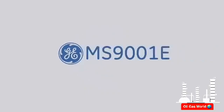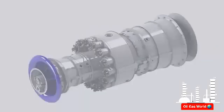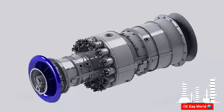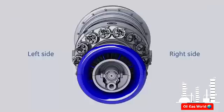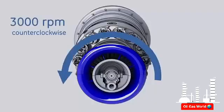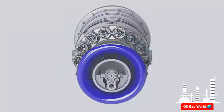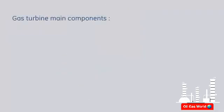MS 9001E Gas Turbine Training. This video will describe the main components of the gas turbine and its functional description. This gas turbine is also known as PG9171E or downstream. The shaft of this gas turbine rotates at 3,000 RPM counterclockwise as viewed looking downstream. This gas turbine consists of the following main components.